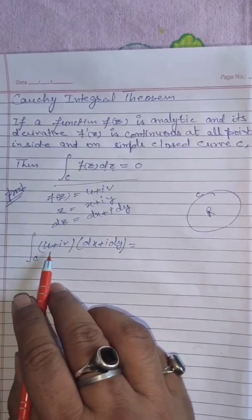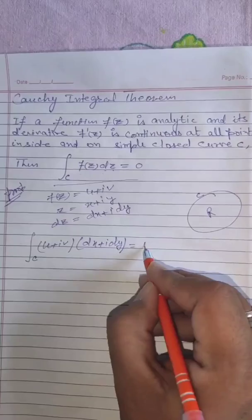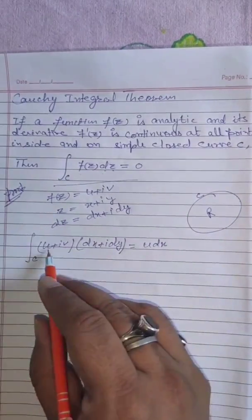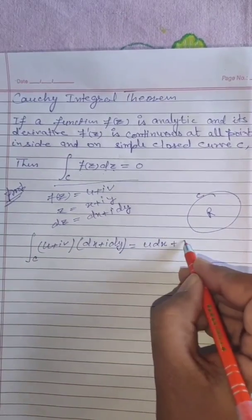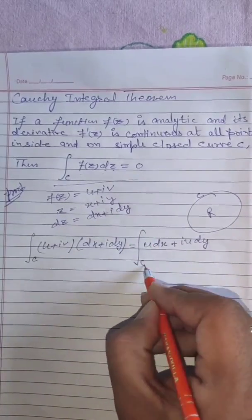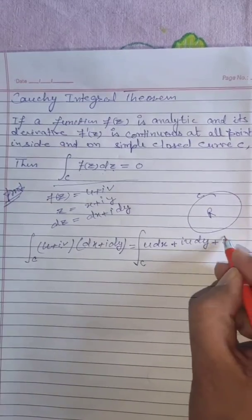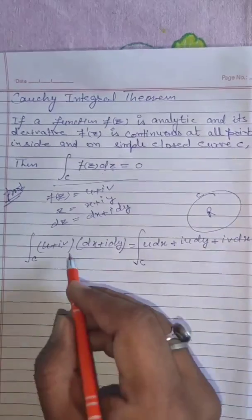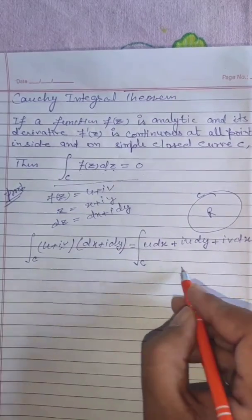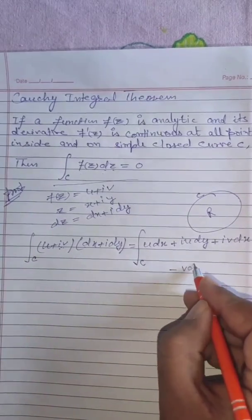Now we multiply both values. So we get u dx and u times idy. Now we multiply iv into idy, so i into i is minus 1, so we get minus v dy.